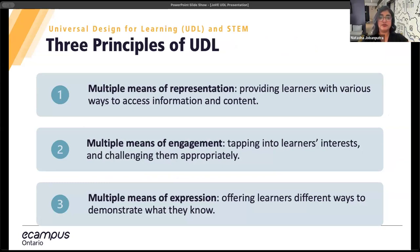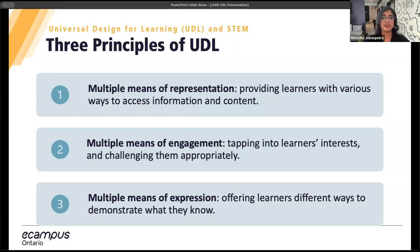The three core components are: First, multiple means of representation — this principle encourages presenting information in various ways, ensuring all students can comprehend the material regardless of their preferred learning style. Second, multiple means of engagement — this is about motivating students by offering different ways to participate and interact with the content, as engagement is key to keeping learners interested. And third, multiple means of expression — this principle focuses on providing students with various options to demonstrate their knowledge and understanding, whether through writing, speaking, or technology, to accommodate different forms of communication.